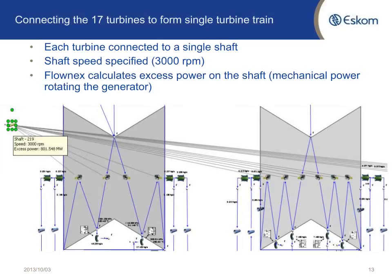At the end of it all, I needed to connect all 17 separate turbines together. I connected them all to one shaft and specified the shaft speed to be at 3000 RPM, and then Flonax calculated the excess power on the shaft that will go to the generator for generating power.